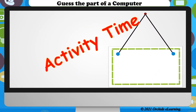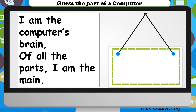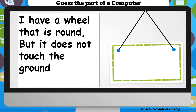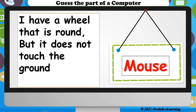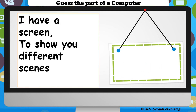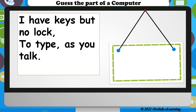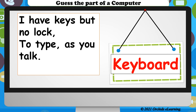Let's do an activity — guess the part of the computer! I am the computer's brain; of all the parts, I am the main. It is the CPU. I have a wheel that is round, but it does not touch the ground. That's the mouse! I have a screen to show you different scenes. I have keys but no lock, to type as you talk. You have guessed it right!